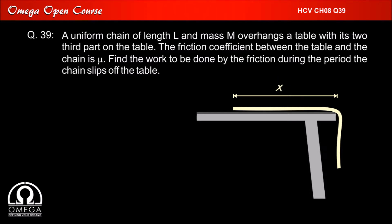Let us assume that at any instant a length X of chain is on the table while rest of it is hanging. Since mass of length L of chain is M, from unitary method we know that mass of length X of chain is M by L into X.